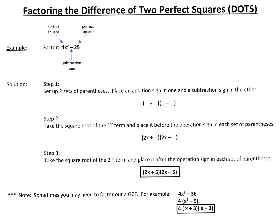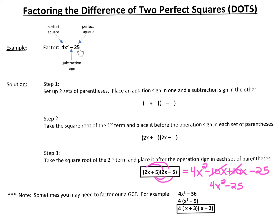I want to show you why this works. If we were to double distribute this out, 2x times 2x is 4x², 2x times negative 5 would be negative 10x, 5 times 2x would be positive 10x, and 5 times negative 5 would be negative 25. If we combine like terms, the negative 10x and positive 10x cancel, leaving us with 4x² − 25 — and that's the original expression. So (2x + 5)(2x − 5) is factored form; those are the factors that multiply to give us the original expression.